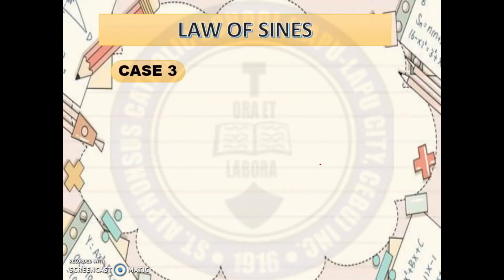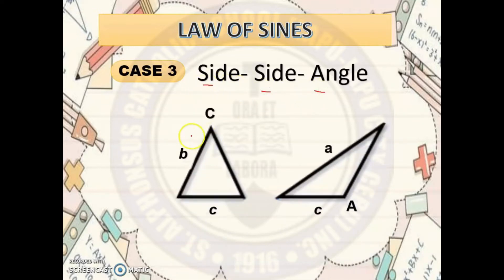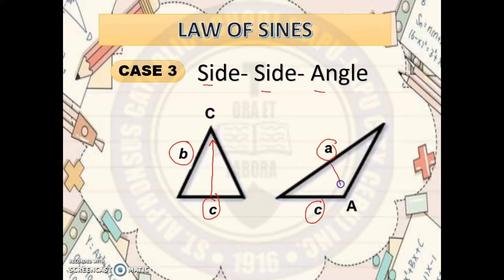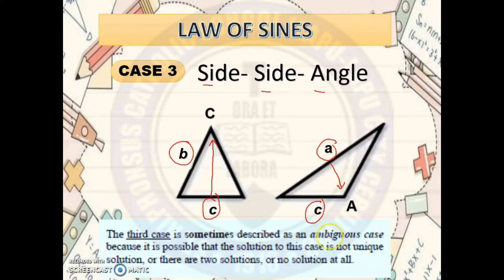For Case 3, the given is side-side-angle: two sides and one angle opposite to either of the two sides. You can see that the given is side B, side C, and one opposite angle, where that angle is opposite to side C. This case is sometimes called the ambiguous case. Why? Because it is possible that the solution is not unique — there may be two solutions or no solution at all. So you must be careful in solving this kind of problem.